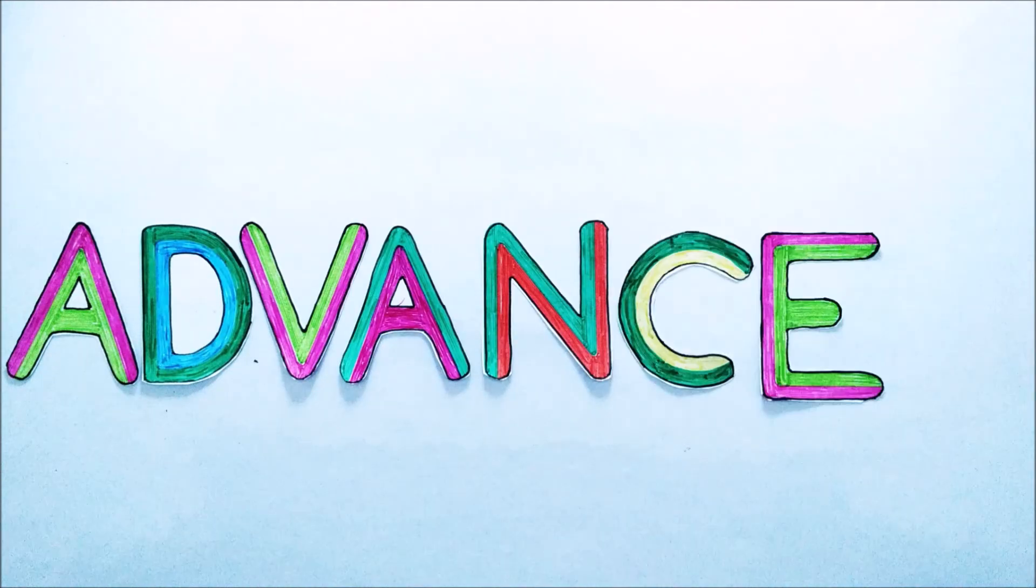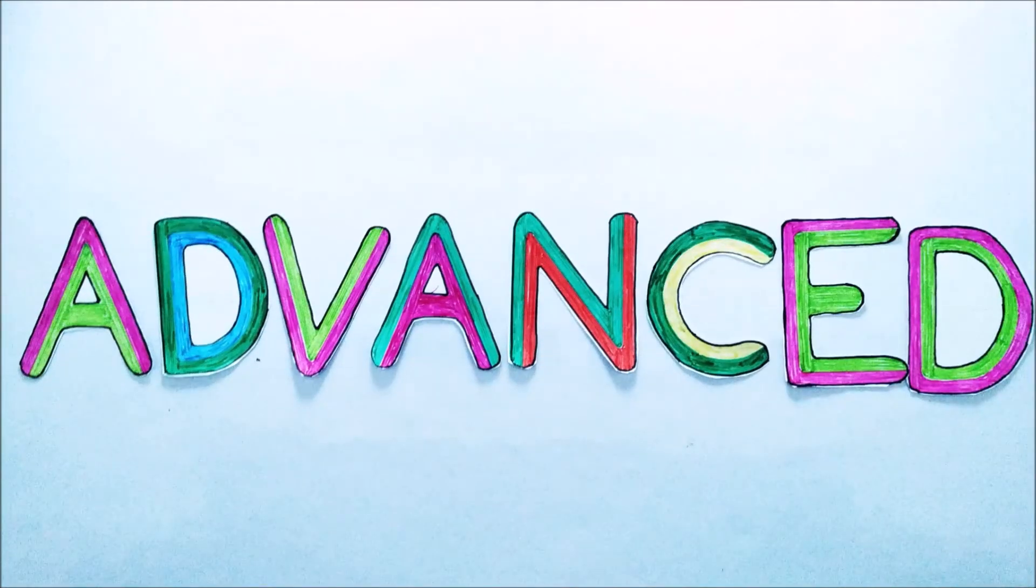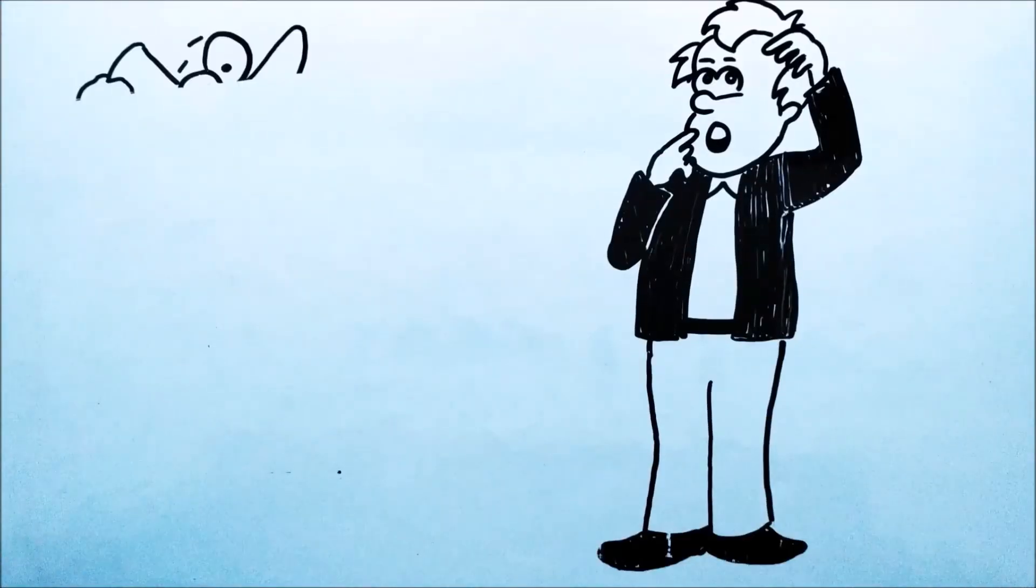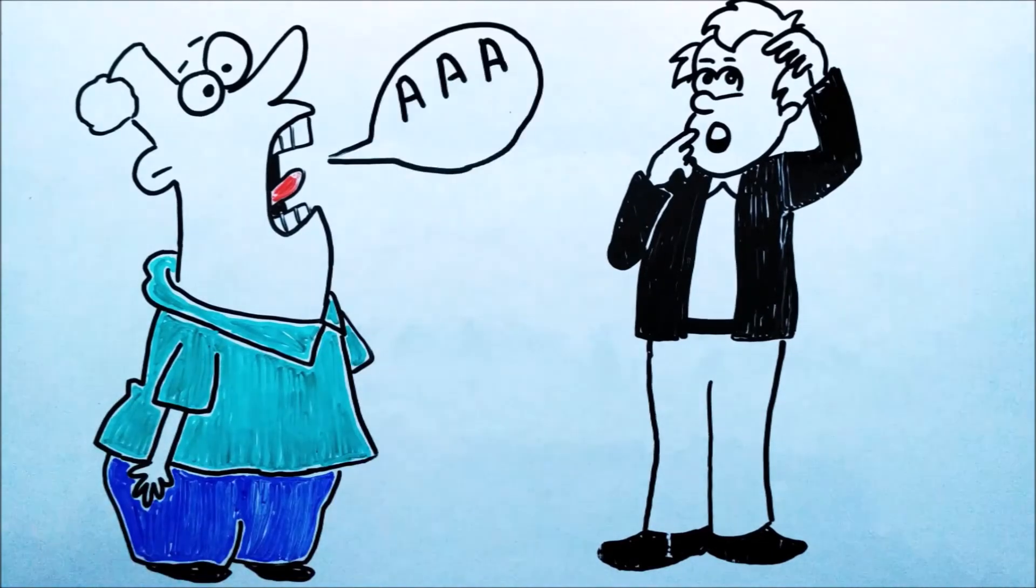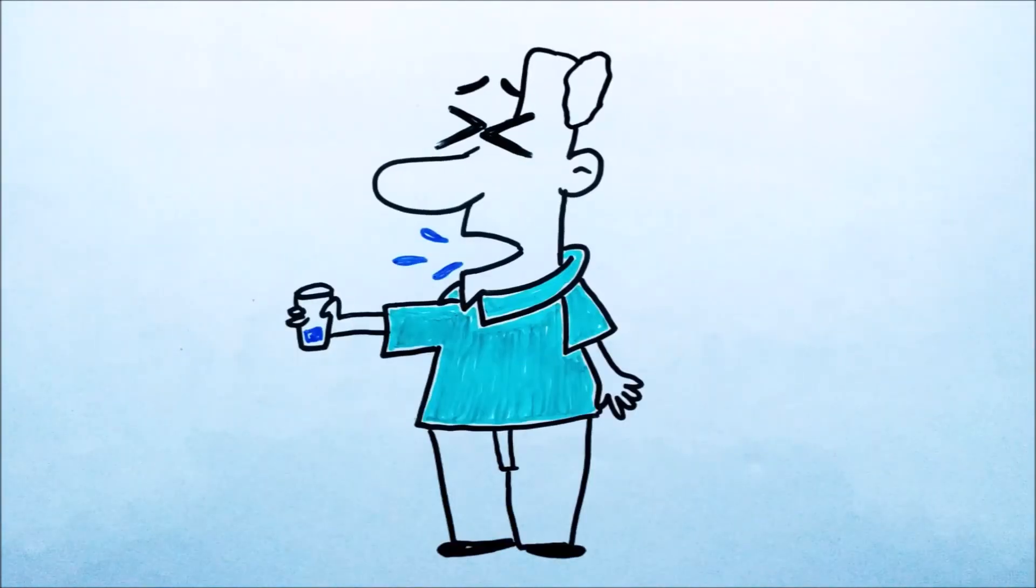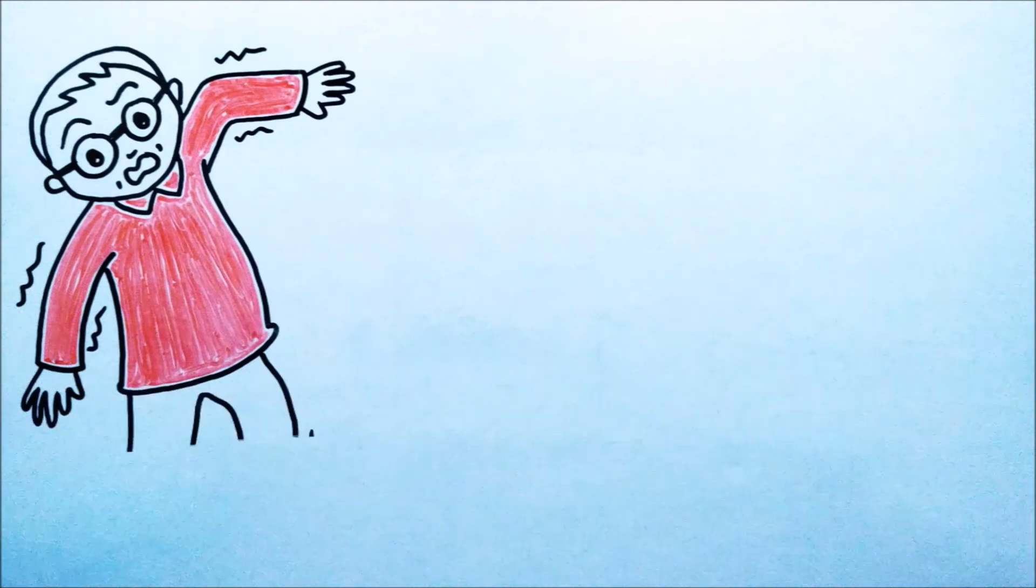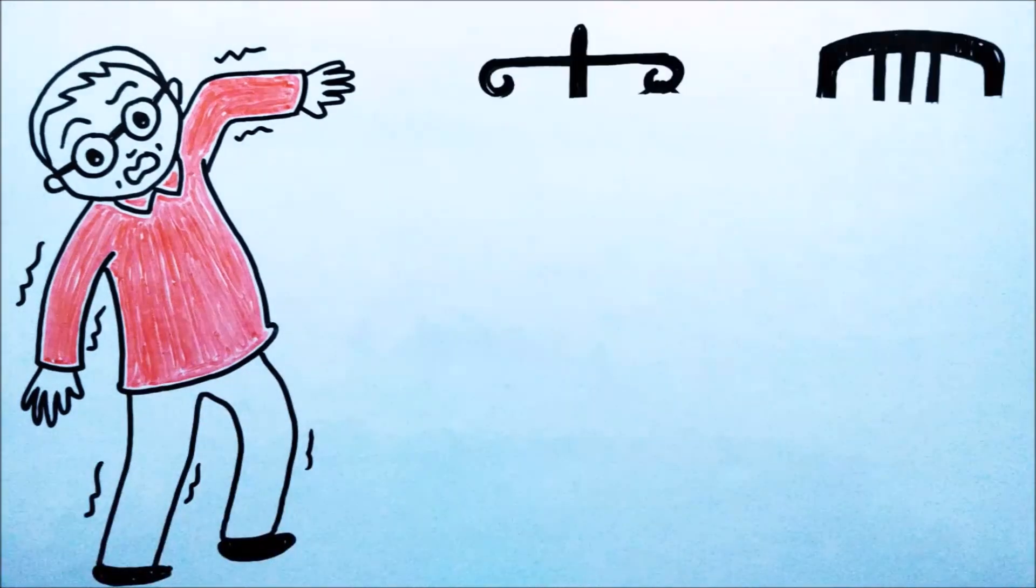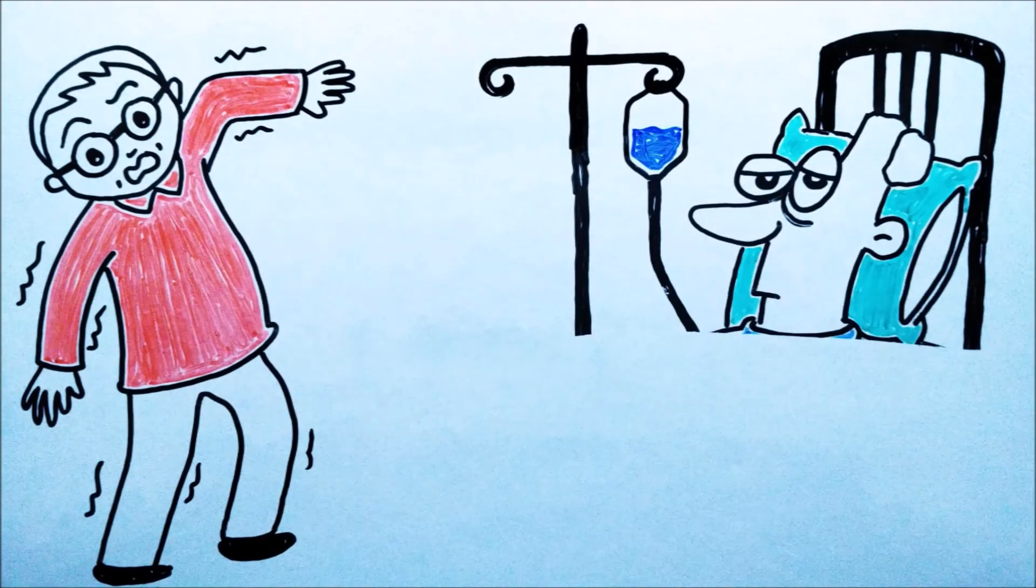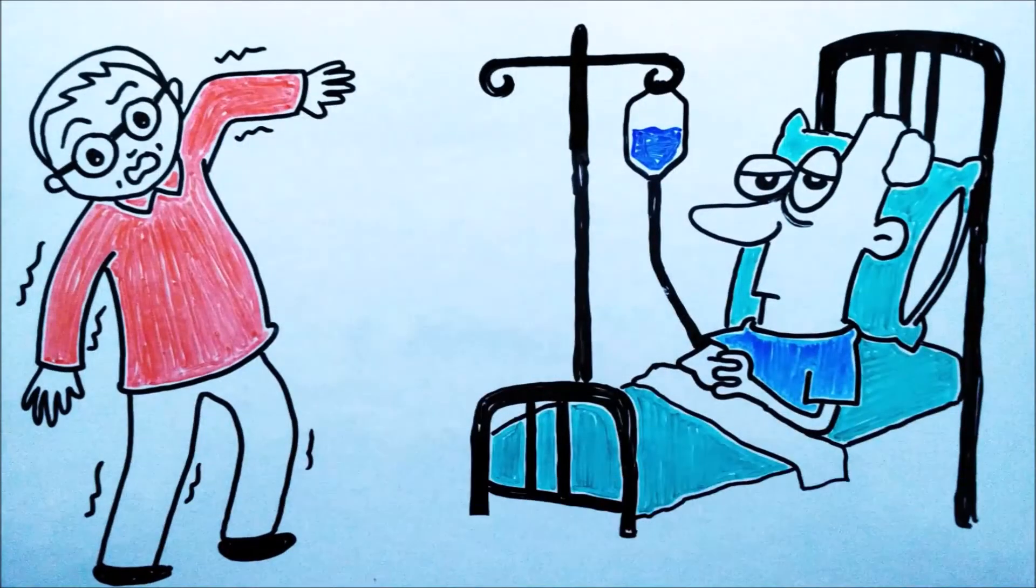The last stage is known as advanced stage and as the name suggests, it is the severe one. In this stage, ability to think becomes very poor. The problem in speaking appears, swallowing the water and food becomes difficult. Even maintaining the balance becomes tough and with the progress of disease, almost all the function of the brain stops. This makes a person anxious and paranoid.